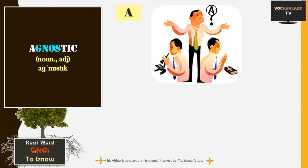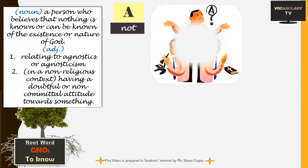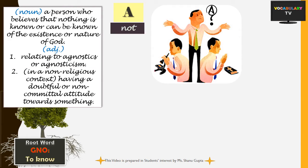The next word is 'agnostic'. The prefix 'a' or 'an' means 'not', so the word literally means 'not known'. The only context in which the word is used is when a person believes that nothing is known or can be known about the existence or nature of God. A person who has such beliefs is called an agnostic.